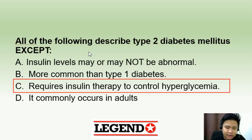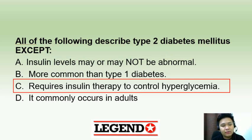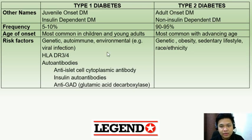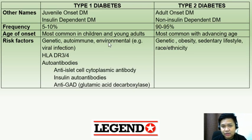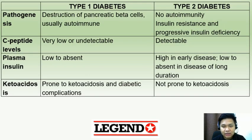However, type 2 diabetes patients eventually require insulin once their disease becomes more severe. This table differentiates type 1 from type 2 diabetes mellitus. If you want to know more about the various categories of diabetes mellitus, we also have another video discussing diabetes that you can watch.